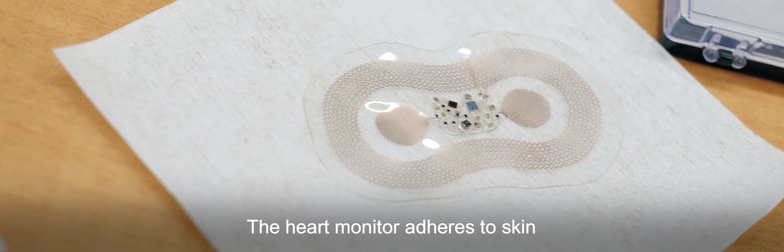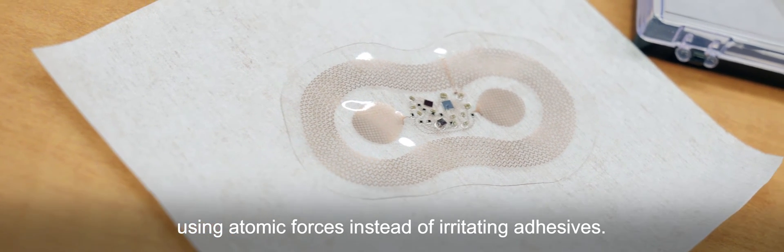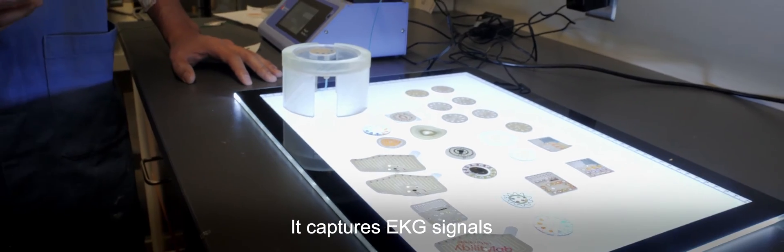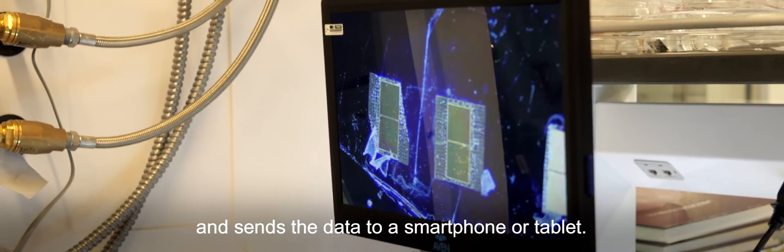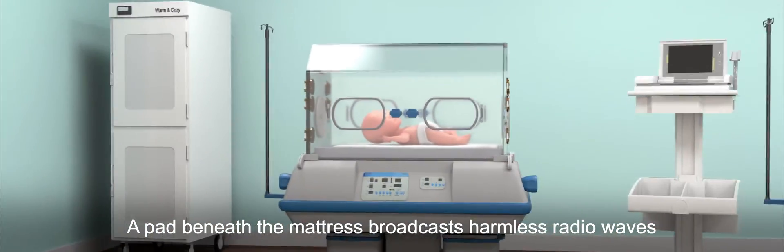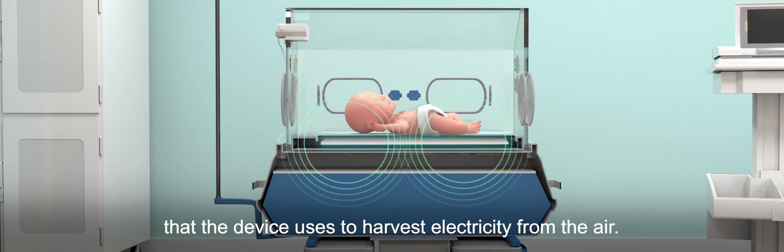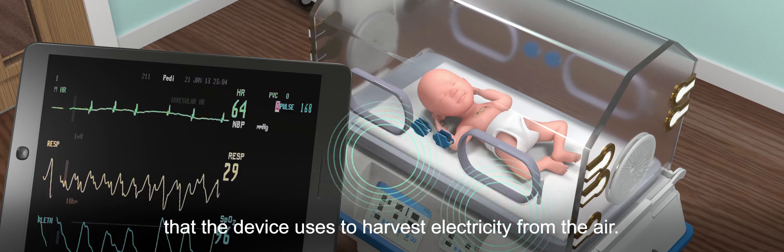The heart monitor adheres to skin using atomic forces instead of irritating adhesives. It captures EKG signals and sends the data to a smartphone or tablet. And it works without batteries. A pad beneath the mattress broadcasts harmless radio waves that the device uses to harvest electricity from the air.